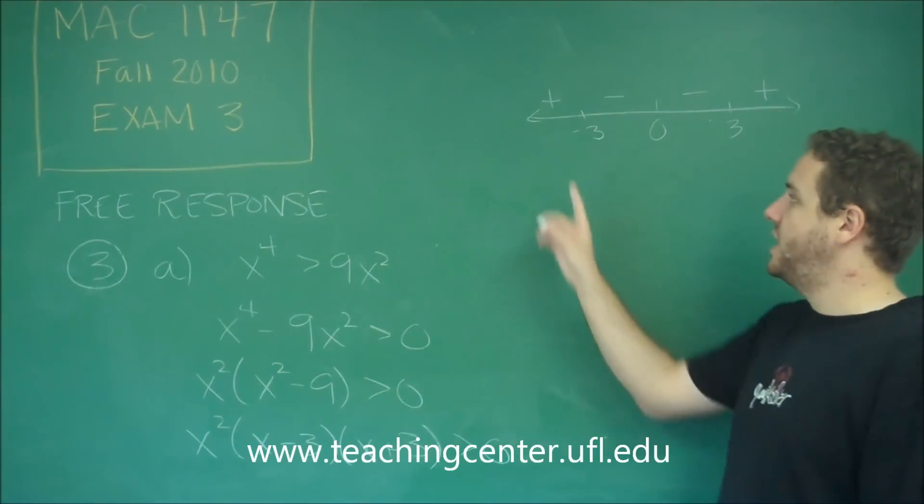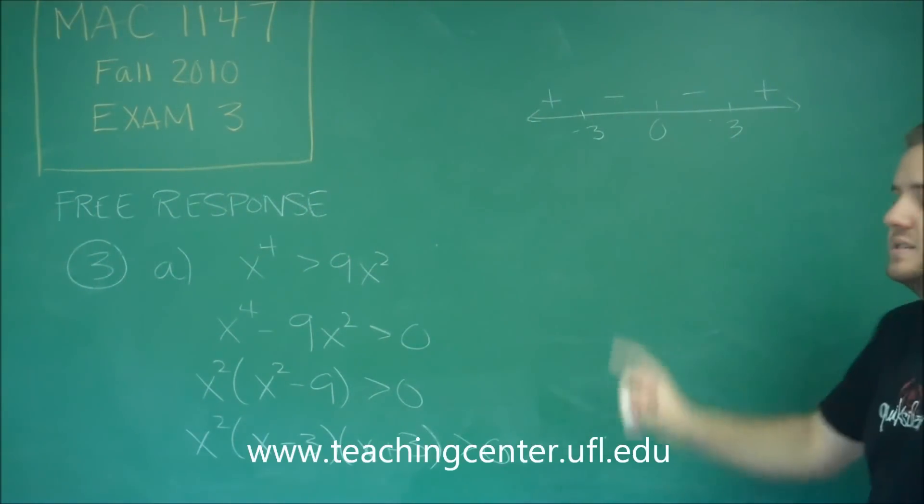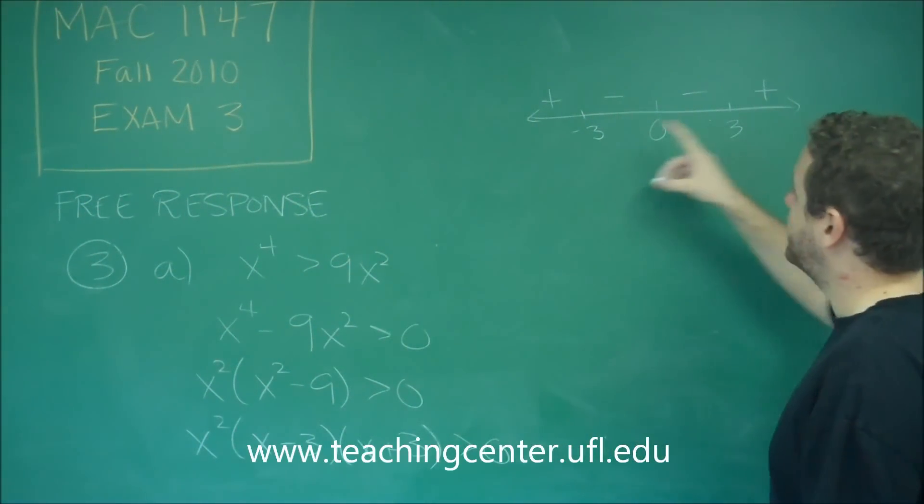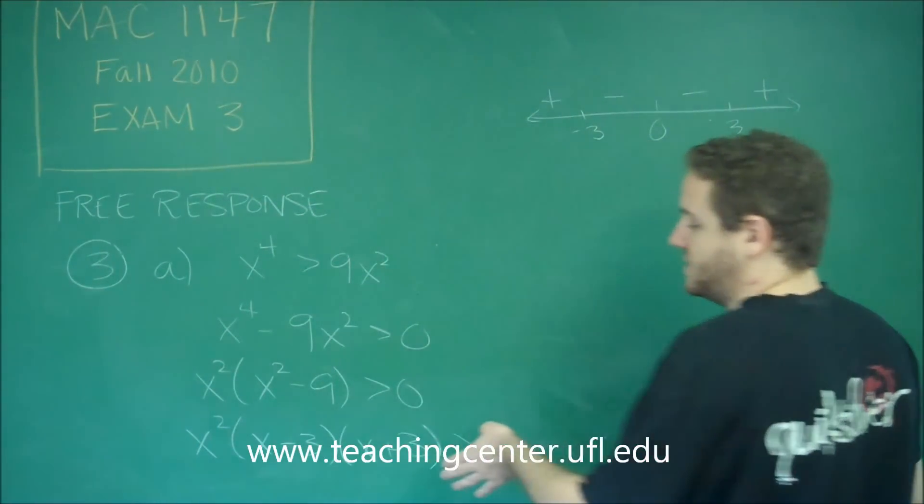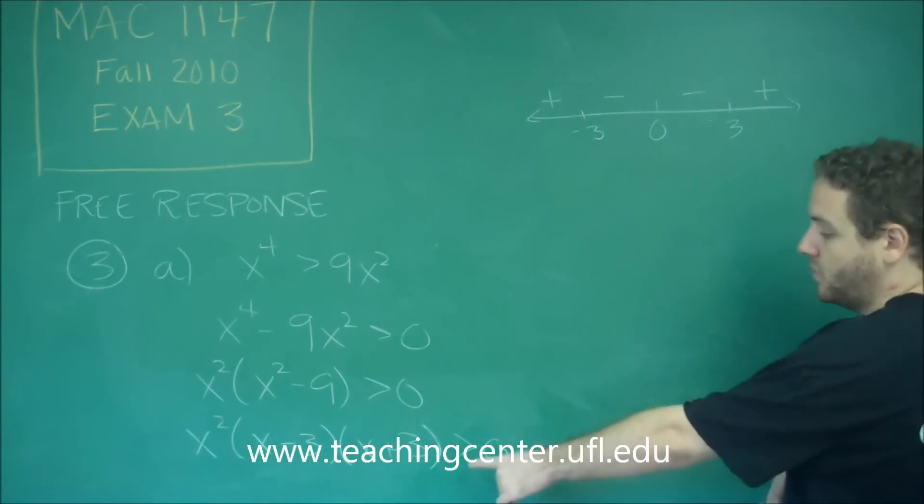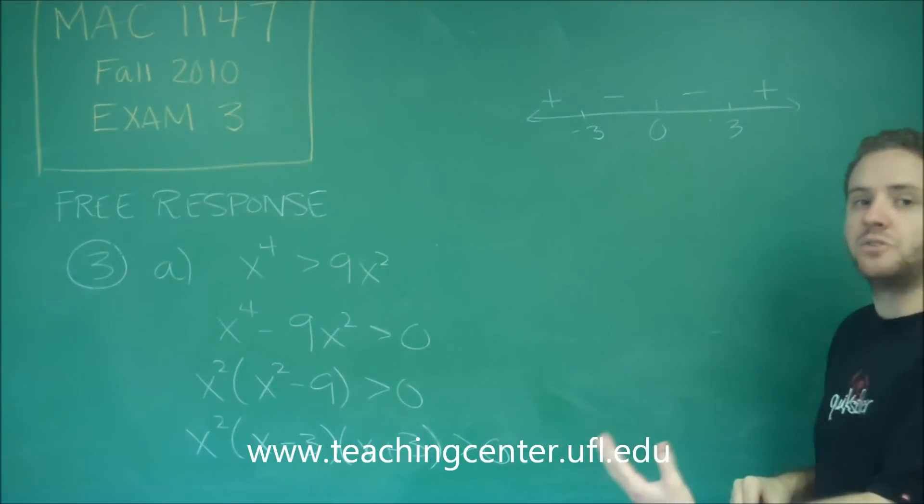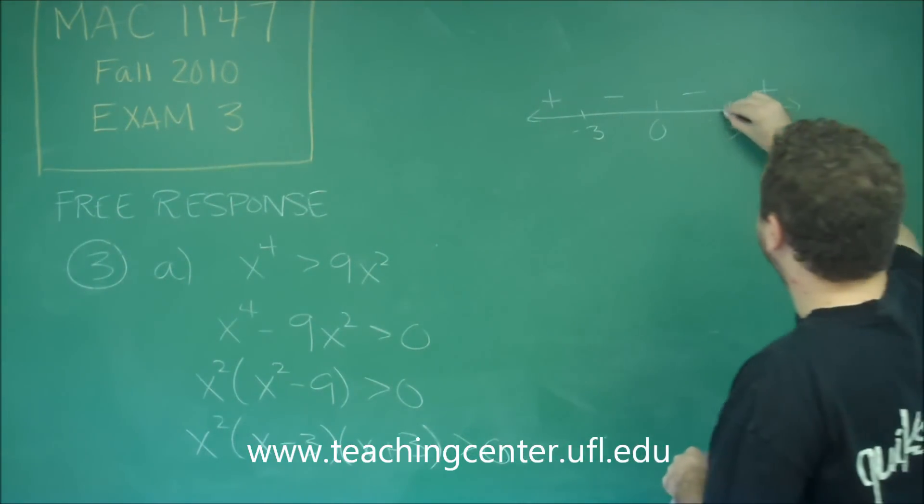The last thing you always want to check is, we have these two ranges, but we need to see what happens at the boundaries. So what happens at 3 and negative 3? Well, either of those numbers will make this whole thing 0 when you plug them in. But we are looking for greater than 0, not greater than or equal to. So these are going to be open circles.